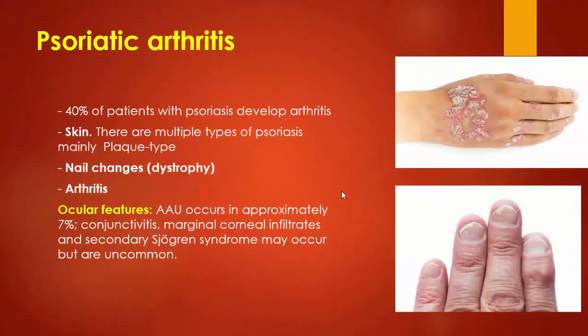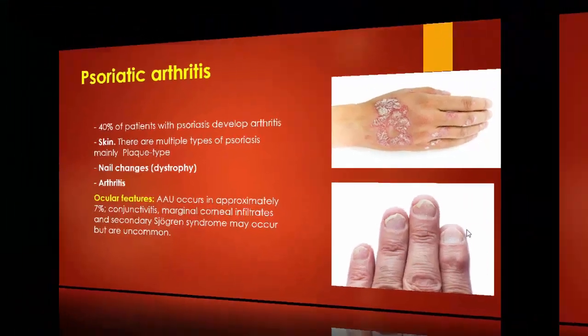Psoriatic arthritis: 40% of patients with psoriasis develop arthritis. Skin is characterized by multiple types of psoriasis, mainly plaque type. There are also nail changes with arthritis. The ocular features mainly include acute anterior uveitis in about 7% of cases, conjunctivitis, marginal corneal infiltrates, and secondary Sjögren's syndrome may occur, but are uncommon.